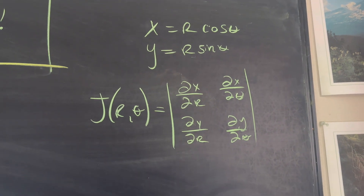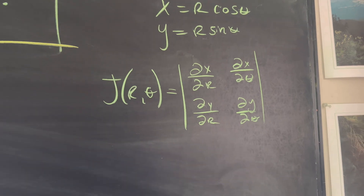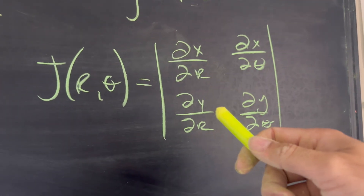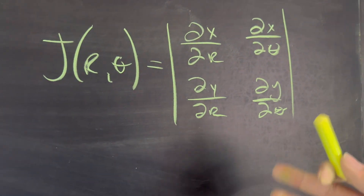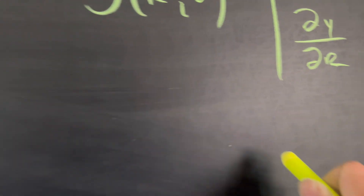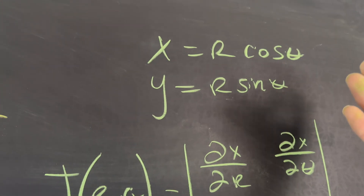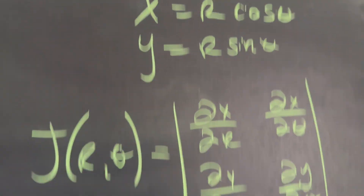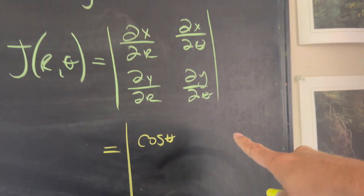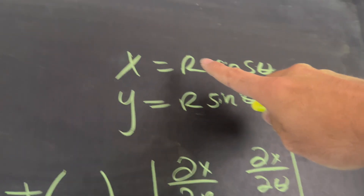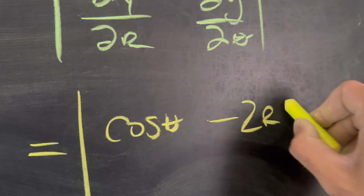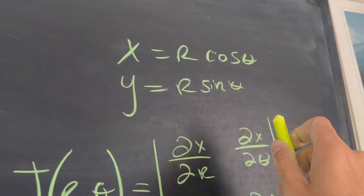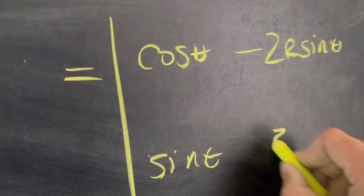The Jacobian means that if we're going to change our variables into polar form, we need to find the factor it stretches by, determined by the determinant of these partial derivatives: the partial of x with respect to r is cosine theta; the partial of x with respect to theta is negative r sine theta; the partial of y with respect to r is sine theta; and the partial of y with respect to theta is r cosine theta.